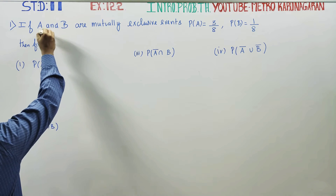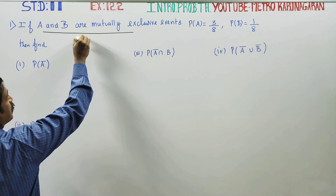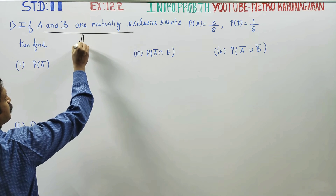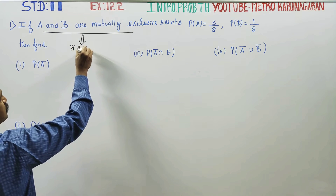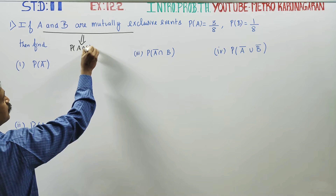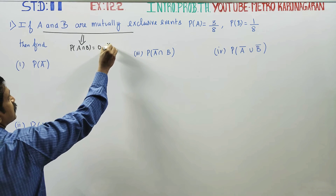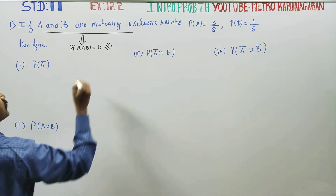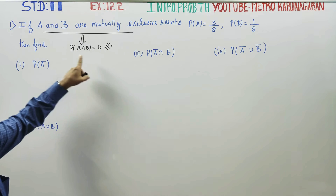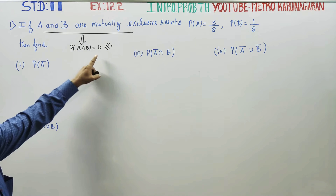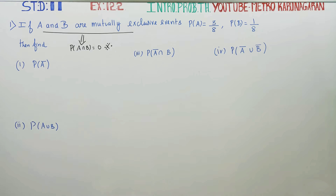A and B are mutually exclusive events. This implies the probability of A intersection B is equal to 0. This is the first key piece of information: if A and B are mutually exclusive events, then P of A intersection B is equal to 0.